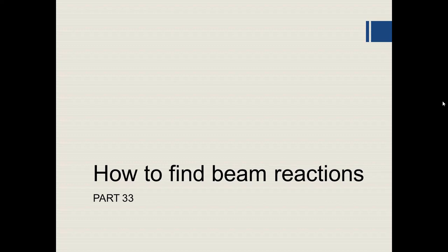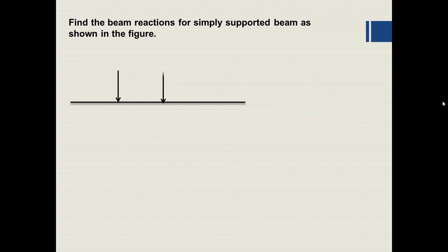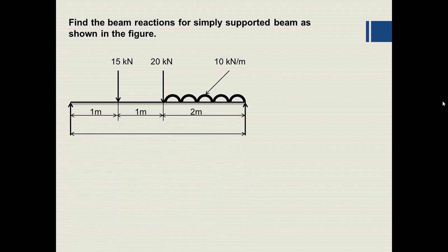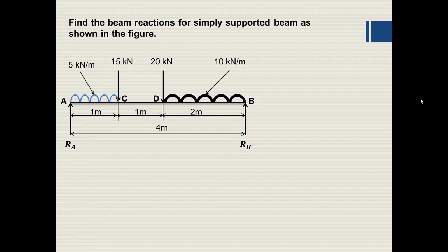In this video we'll see how to find beam reactions in case of a simply supported beam as shown in the figure. It has point loads and UDL. There is a uniformly distributed load of 10 kilonewton per meter acting for 2 meter length, another UDL of 5 kilonewton per meter acting for 1 meter length, and two point loads of 15 kilonewton and 20 kilonewton acting at 1 meter and 2 meter from the left-hand support respectively.